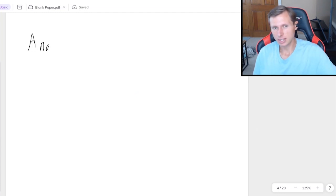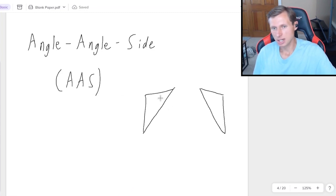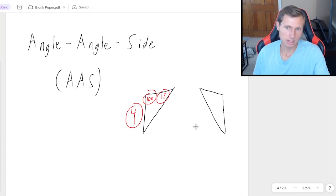Then there's three more to go. Next we'll have angle, angle side, or AAS. And that would look like this, for instance, where I say 15 degrees there, 100 degrees here, and then maybe this side is four or something. But you'll notice I have angle, angle, and then side in that order.